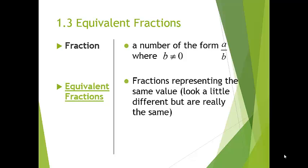Today we're going to talk about equivalent fractions. A fraction is a number of the form a divided by B — any number a over B — but B cannot equal zero, because you cannot divide by zero. The top number is called the numerator and the bottom number is called the denominator.